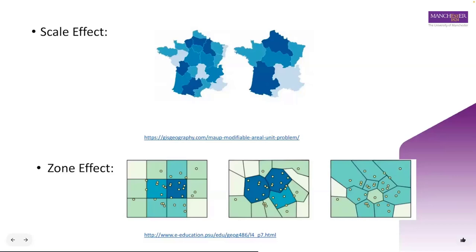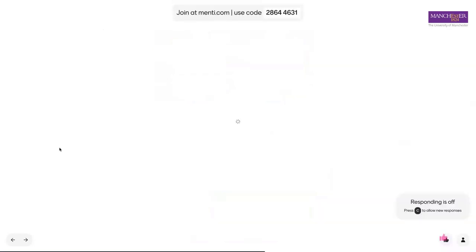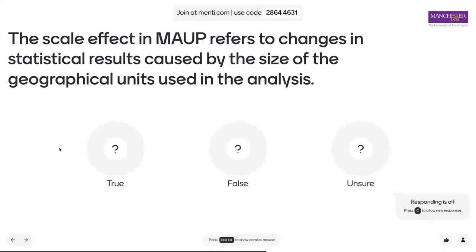You might be familiar with the zone effect in real life — it can occur by accident or on purpose. For example, it can occur when a political party wants to favour an election by manipulating political boundaries. This is typically how one would rig an election and it's also known as gerrymandering. The MAUP is a phenomenon that reminds us of the importance of scale and zoning issues in spatial analysis, as results can vary significantly based on the size and shapes of spatial units used.